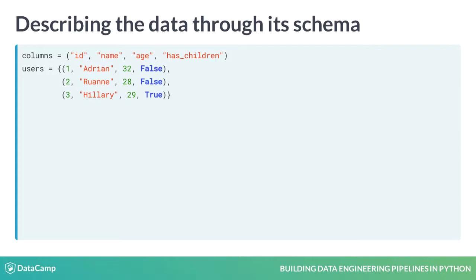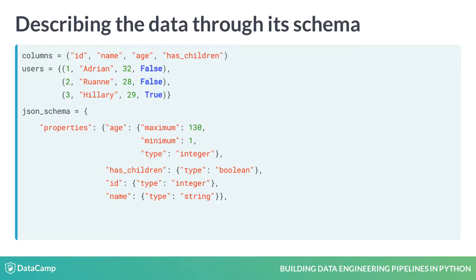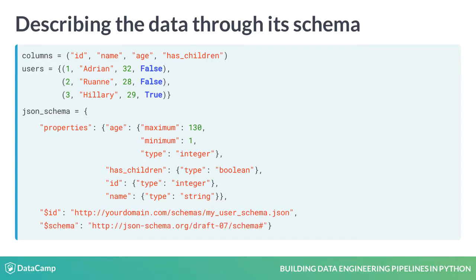Imagine you would need to pass this set of data to a process. With a Singer spec, you would first describe the data by specifying its schema. The schema should be given as a valid JSON schema, which is another specification that allows you to annotate and even validate structured data. You specify the data type of each property or field. You could also impose constraints, like stating that the age should be an integer value between 1 and 130, as we've done here, or that a phone number should be in a certain format. The last two keys in this JSON object are the ID and schema. They allow you to uniquely specify this schema within your organization and tell others which version of JSON schema is being used. They're optional, but highly recommended in production-grade code.